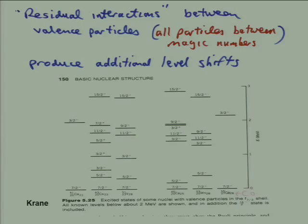For the independent particle shell model, when you start moving away from closed shells and putting more and more nucleons into a given orbital — the example here is the f-7/2 shell, just above the magic number of 20 — the level schemes you see become more and more different from what you'd predict on the basis of the shell model. When you put three, four, or five particles into one shell model orbital, those neutrons or protons are actually interacting with one another, and that alters the excitation levels.